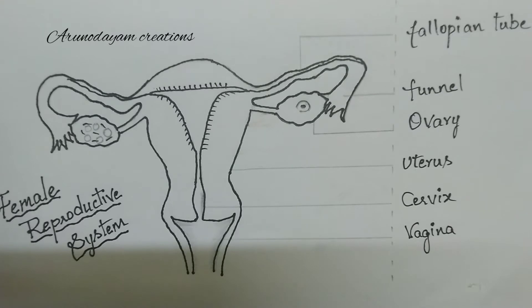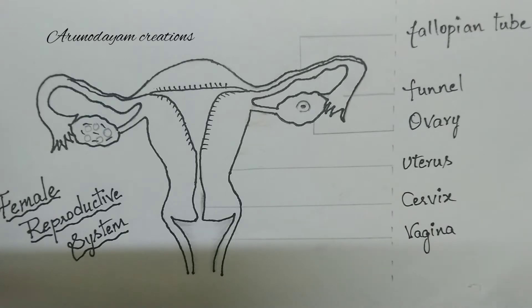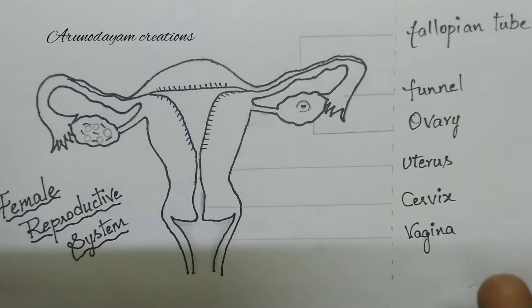The female reproductive system is present in the abdominal region of a female. Compared to the male reproductive system, the female reproductive system performs so many more functions.